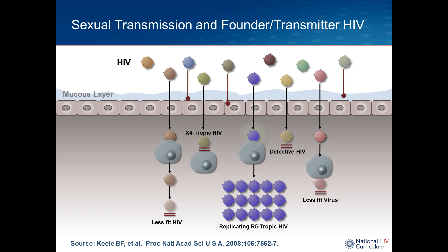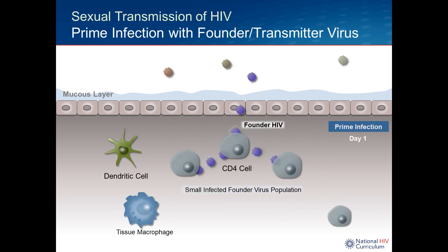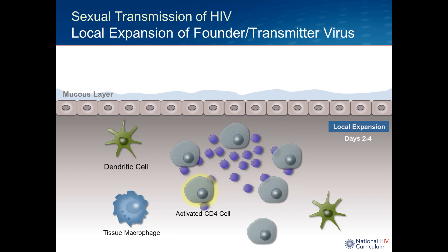Almost always the transmitter virus is so-called R5 tropic virus, and the cells it infects are usually CD4 cells entering through the CCR5 pathway. The very early events are called the prime infection, occurring essentially on day one, with very limited replication — possibly within a single transmitted CD4 cell or a few adjacent cells. By day two to four, you start to see a little local expansion across nearby CD4 cells.